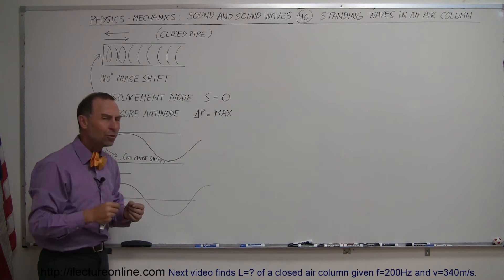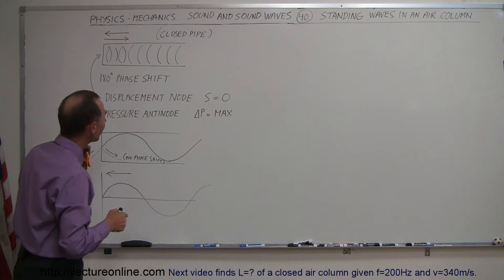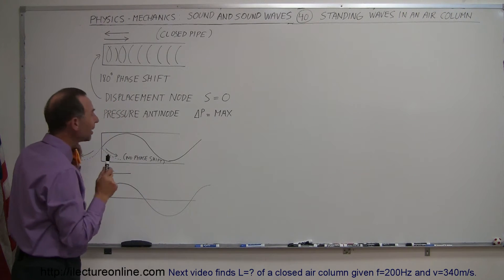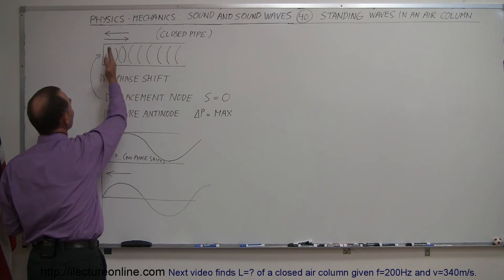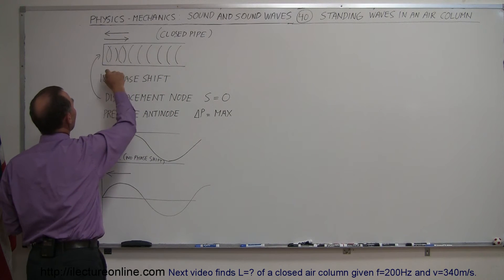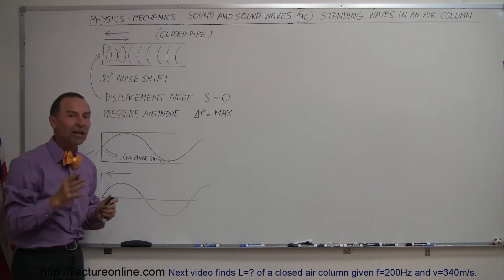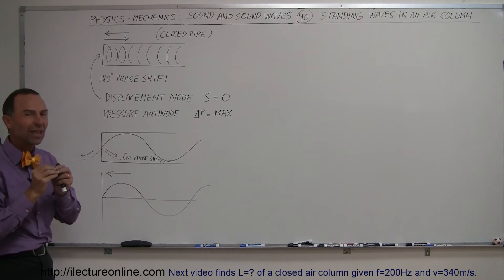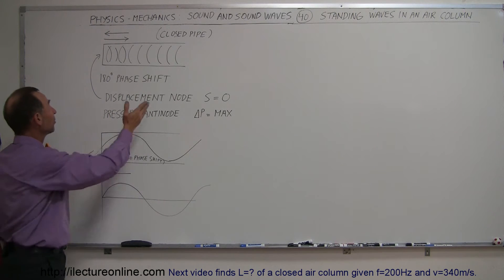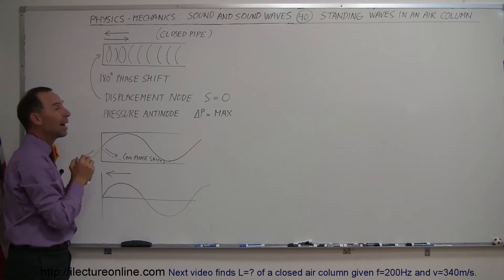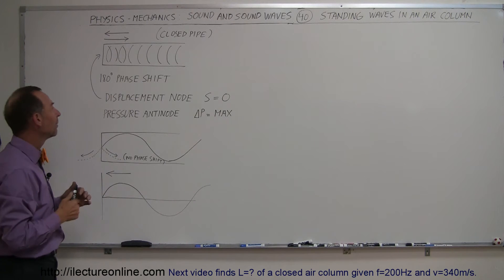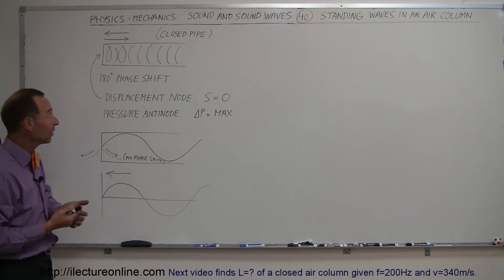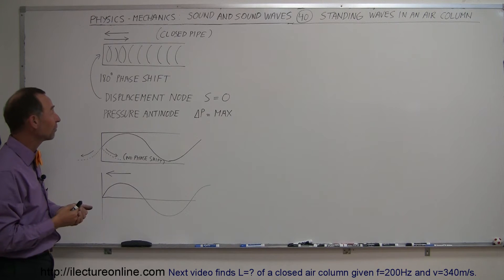How do you get constructive interference? When the wave hits the end of the pipe and comes back, there will be a 180-degree phase shift because the density of air is less than the density of the material of the pipe, which causes the wave to flip over instantly by a half wavelength — hence the 180-degree phase shift.